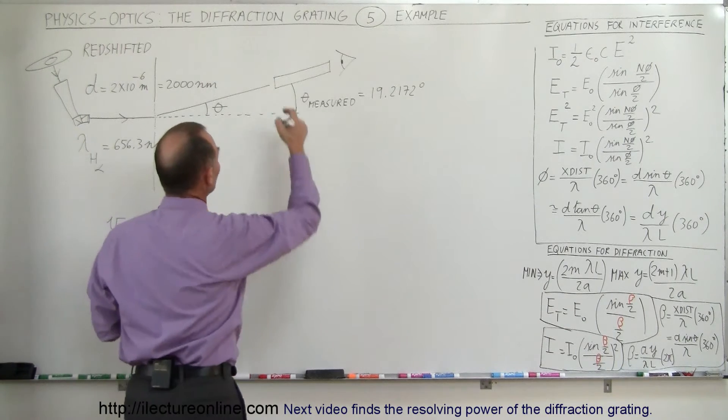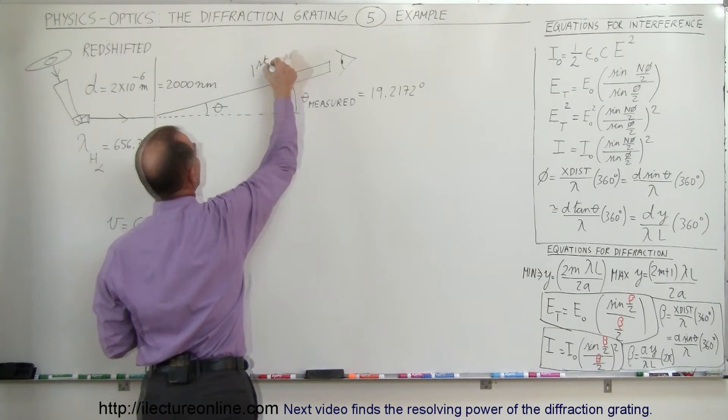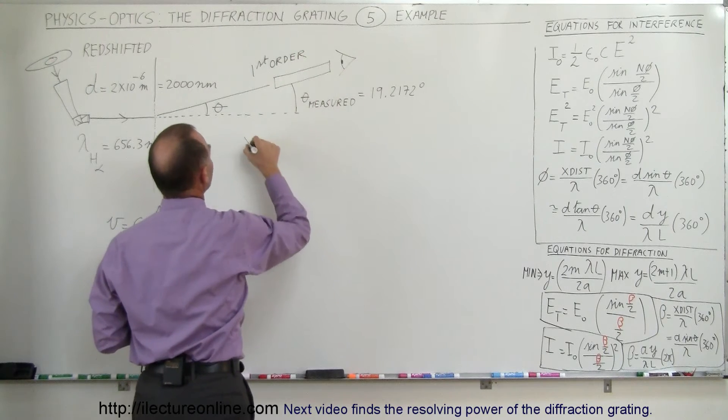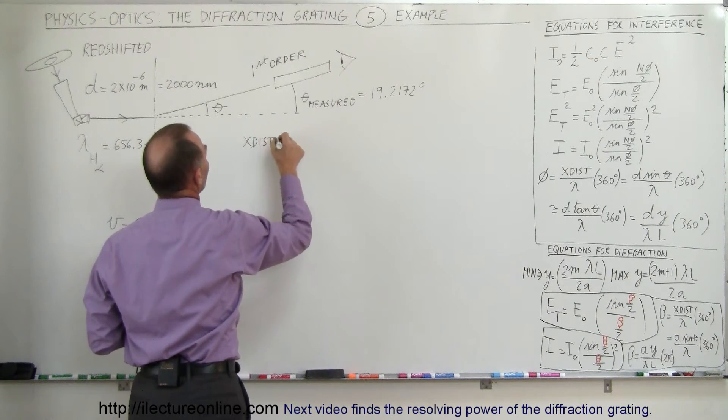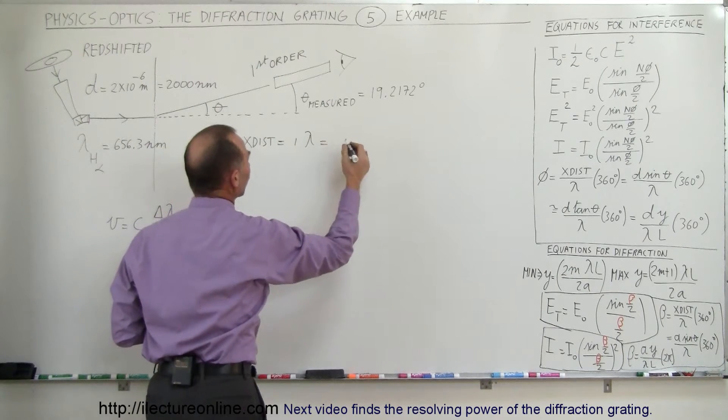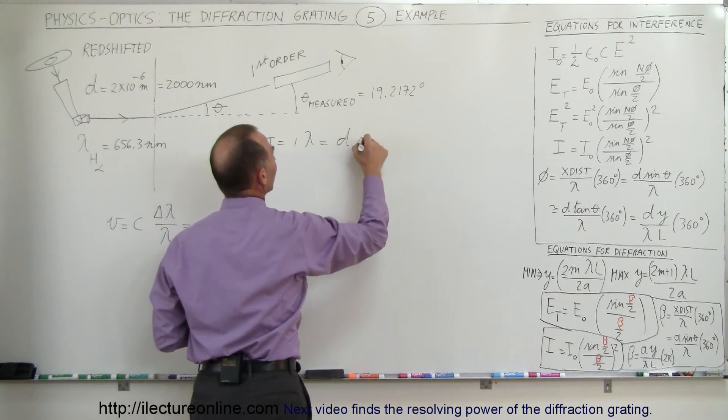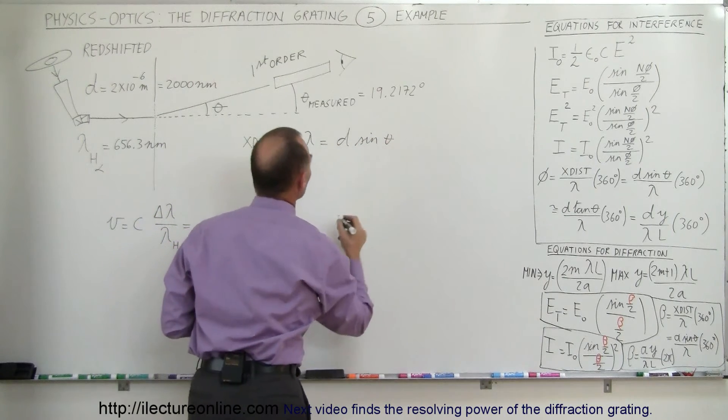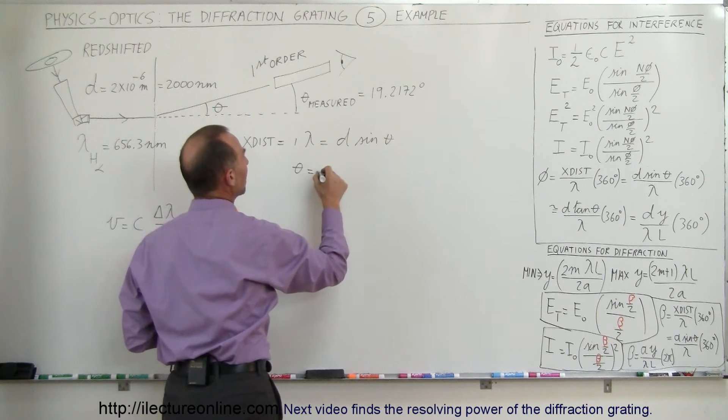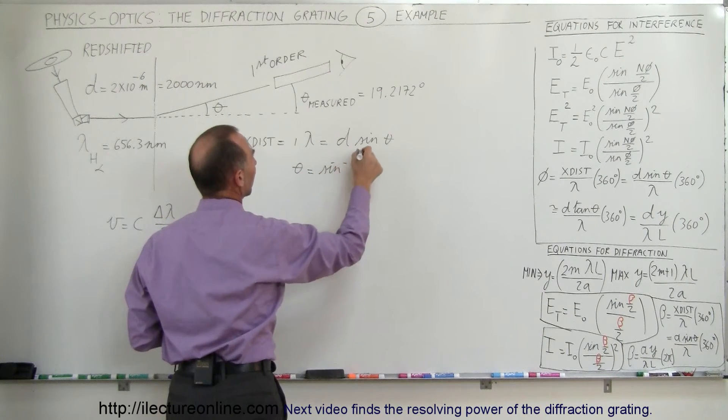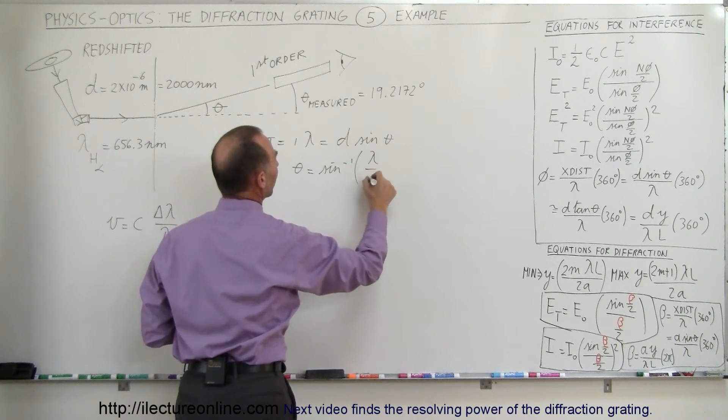Since this is going to be the first order, we can then say that the extra distance traveled has to equal one wavelength, and that is also going to be equal to d times the sine of the angle theta, which means that theta is going to be equal to the arcsine of lambda divided by d.